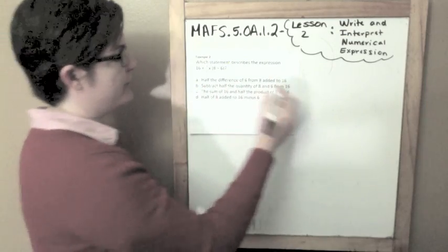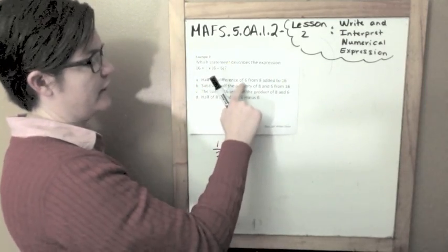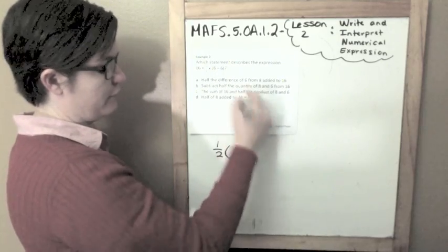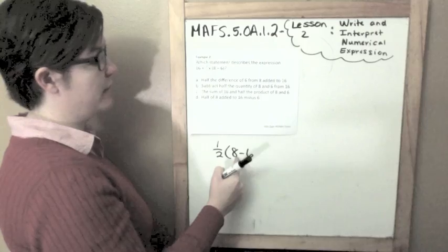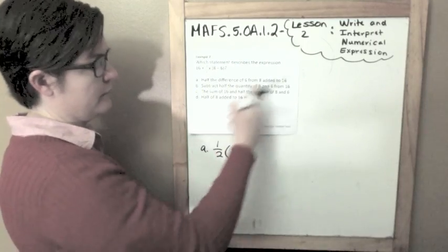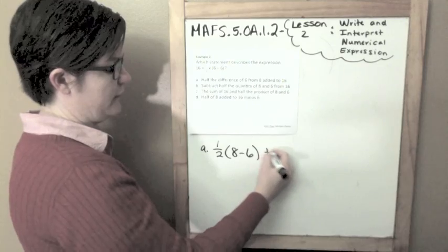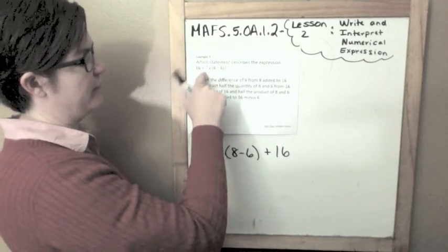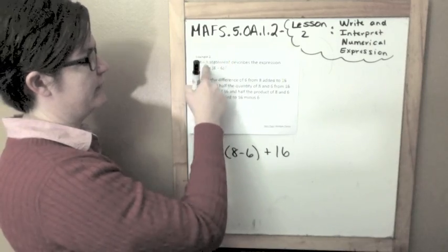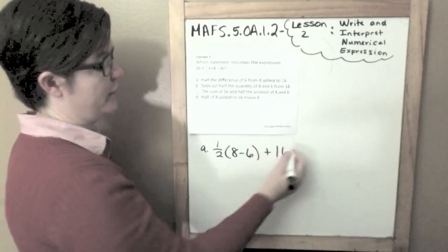It says half of the difference, so half of the difference of 6 from 8, so 8 minus 6 because it's 6 from 8, added to 16, so plus 16. That looks very similar to what I have up here because I'm adding this part and that part. This plus 16 could be over there, so this one is looking pretty good.